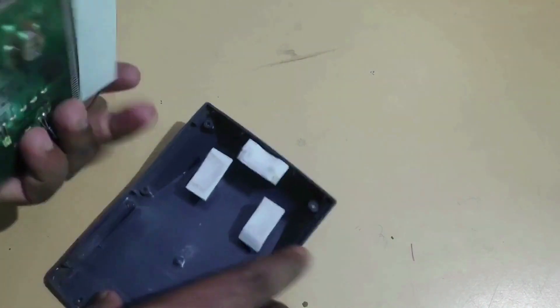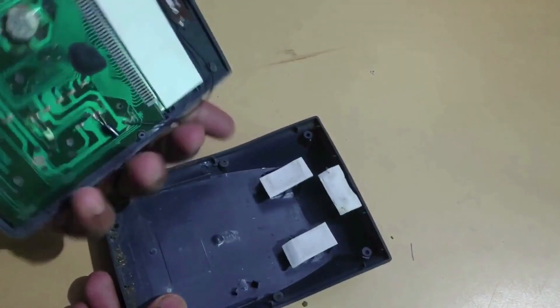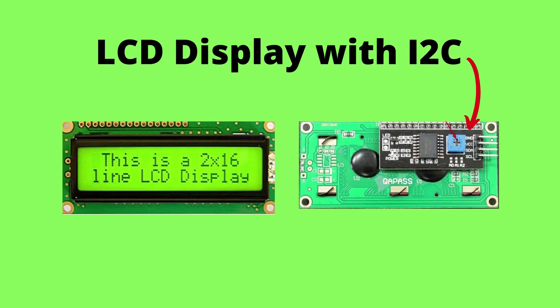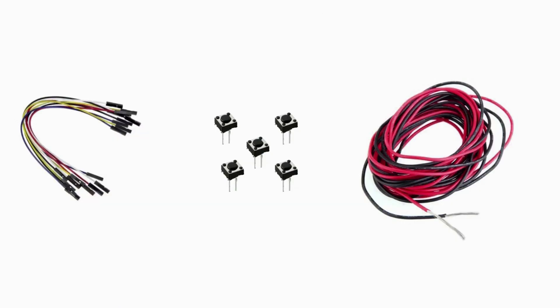Take out the LCD display from the calculator. Materials required: Arduino Nano, LCD display with I2C attached. Don't buy these things separately — try to buy them already attached, because if you buy them separately you have to solder it yourself, which is a little difficult. We also need female to female jumpers, buttons, and wires.